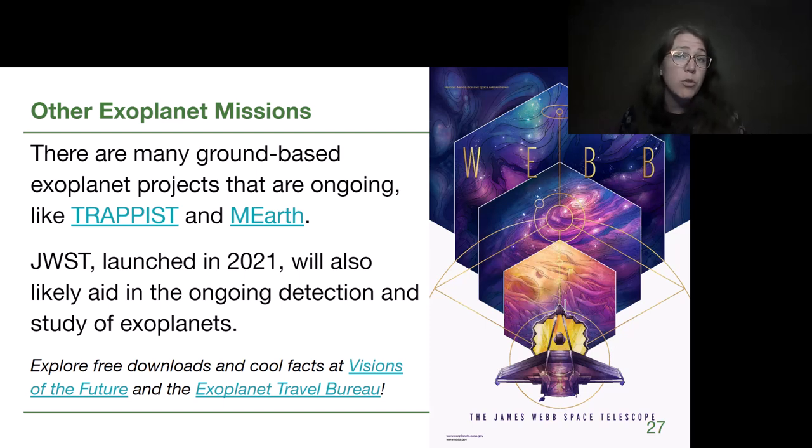There are also ground-based exoplanet projects that are ongoing like TRAPPIST. The TRAPPIST-1 mission was a big publicity reveal in February 2017 where there was a smaller red star that had seven different exoplanets, all roughly Earth-sized, and that TRAPPIST mission is continuing to search for things. And then MIRTH stands for a project that is looking for Earth-like planets around M stars. And then JWST has a lot of different science goals but exoplanets is one of them and so it was launched in 2021 and will continue to aid in our finding and follow-up study of exoplanets.